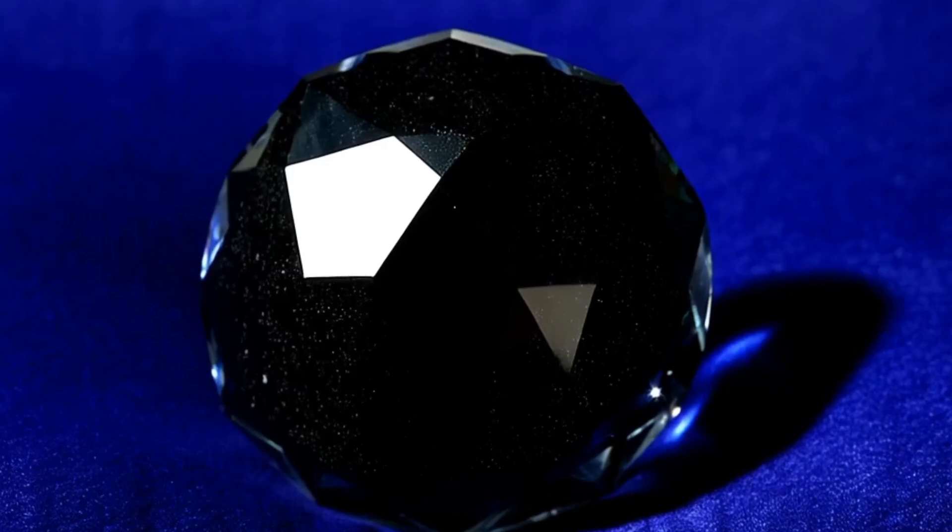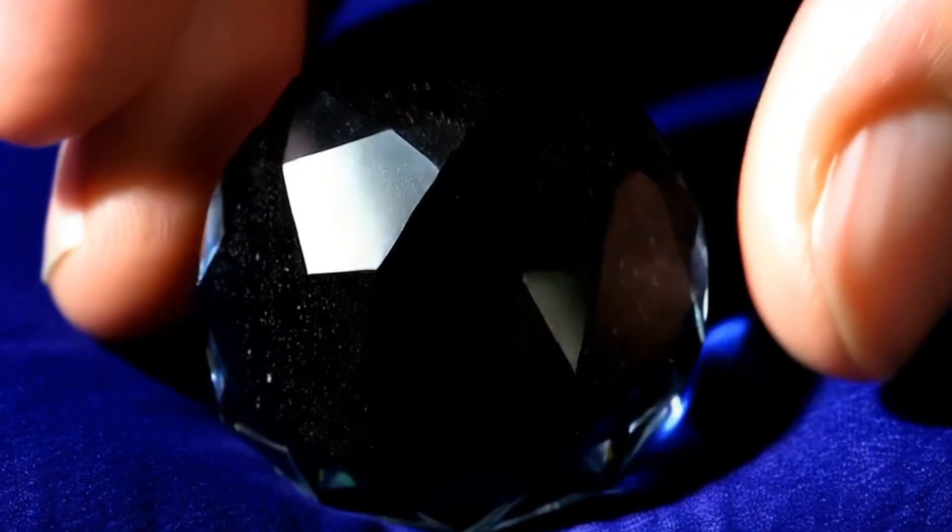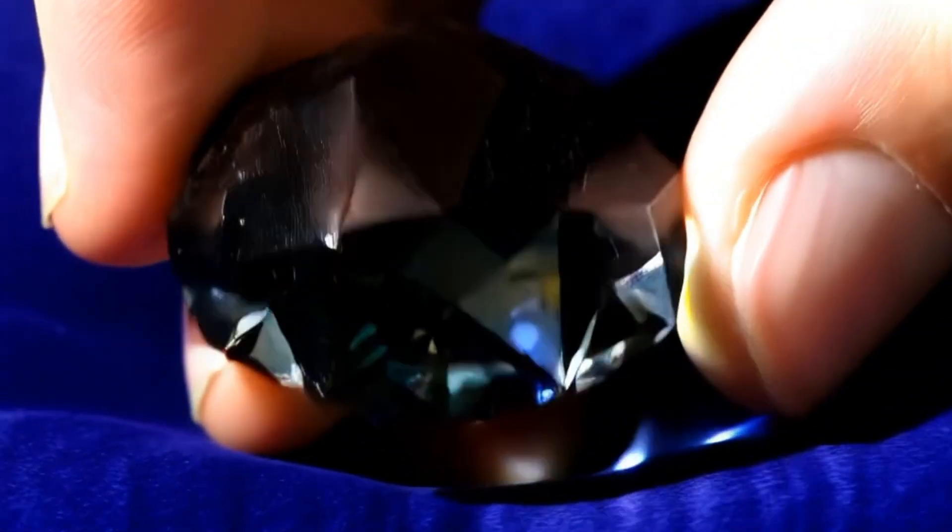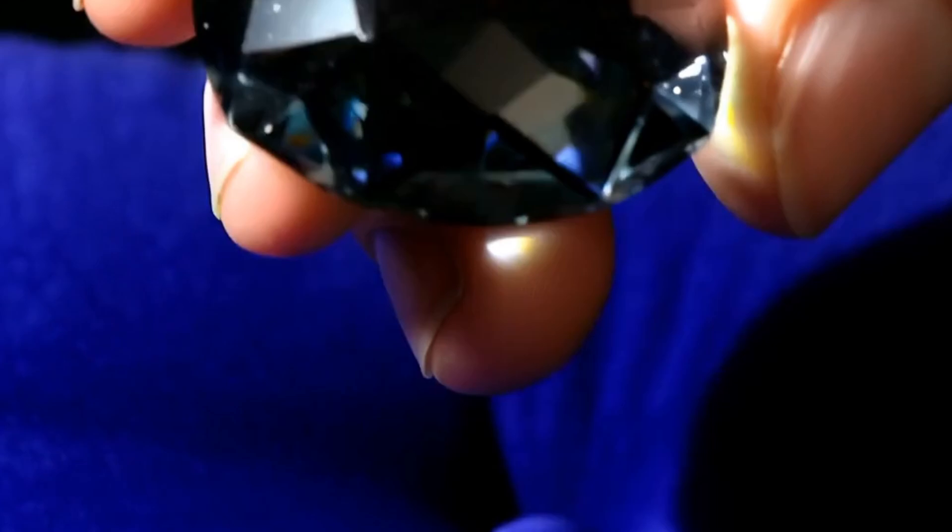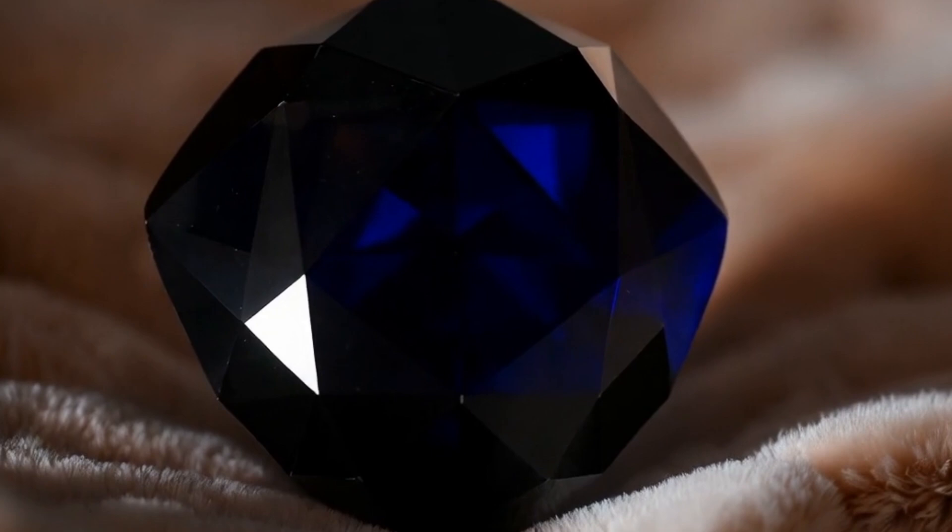Black diamonds carry a quiet gravity, as if each one has stored a fragment of night inside it. Unlike white diamonds that sparkle instantly, carbonado reveals its nature through texture, density, and behavior under light. With a few careful home tests, you can get surprisingly close to identifying the real thing.